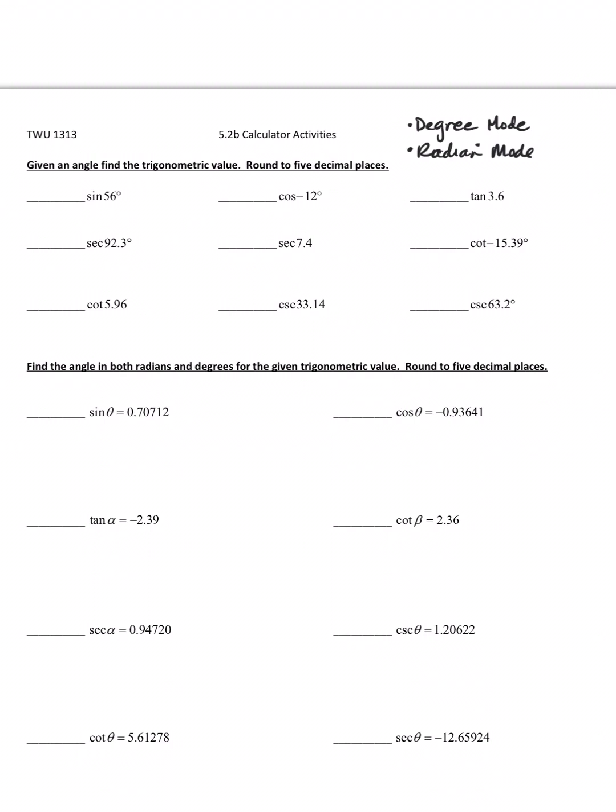So instead of flipping back and forth on my calculator on the video, I'm just going to write in here what I actually typed in the calculator. On the first one, the directions say given an angle - that's important. If they give us the angle on these nine, round to five decimal places.